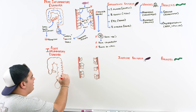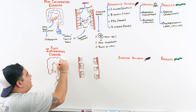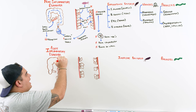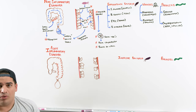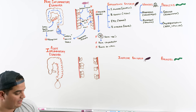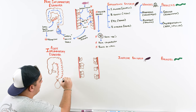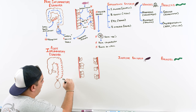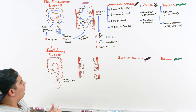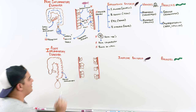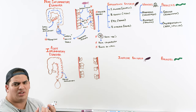In acute inflammatory diarrhea, the small bowel is preserved — it's usually the colon that's affected, particularly the descending colon and possibly the last part of the transverse colon. So you're looking at large intestine or colon involvement.